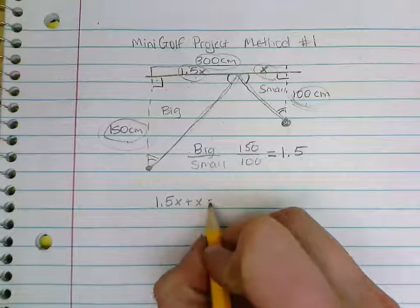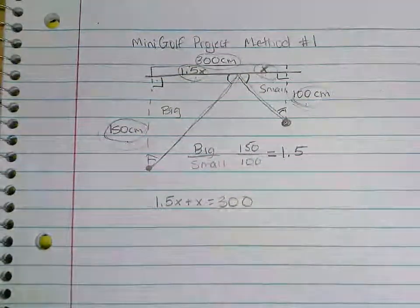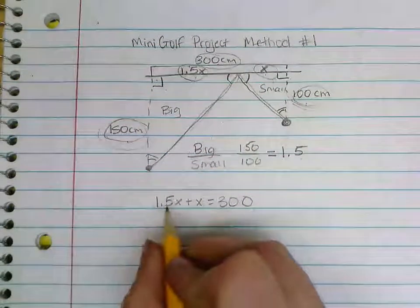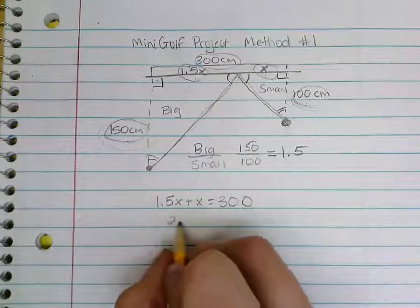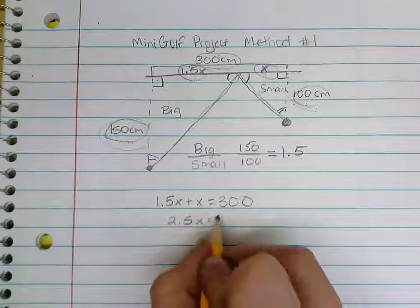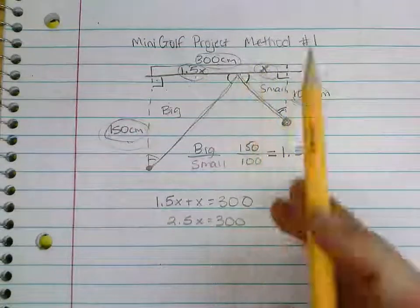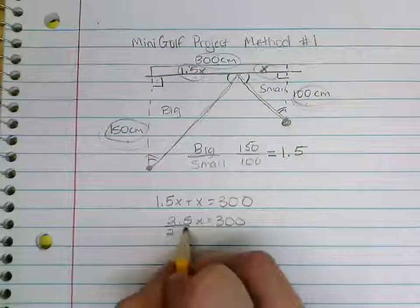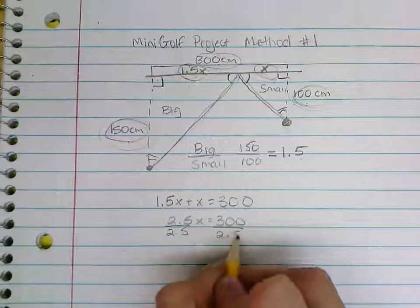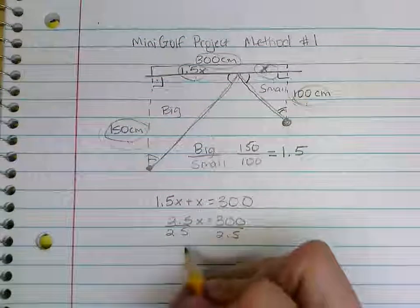Okay, so now combining like terms, 1.5X plus 1X would be 2.5X, and that has to equal 300. And if I want to figure out what X is or what this measurement is here, I can divide both sides by 2.5, and divide by 2.5, and that's going to leave me with X equals 120.